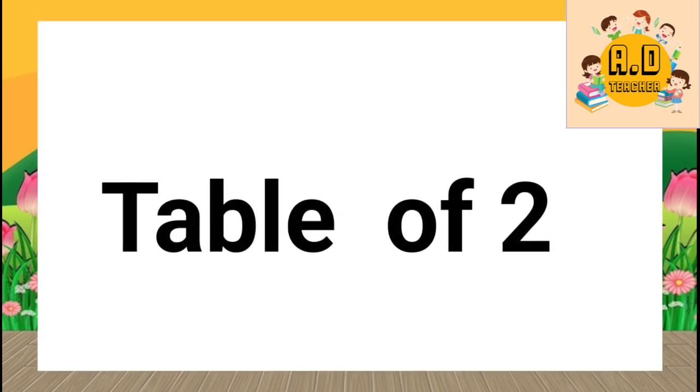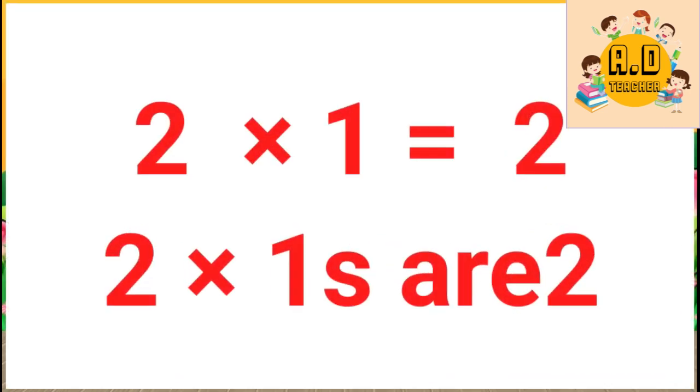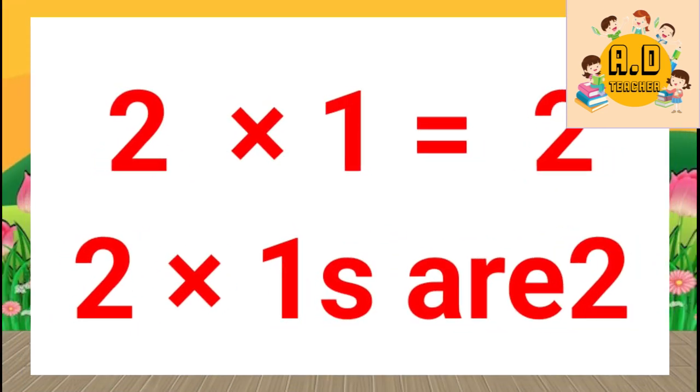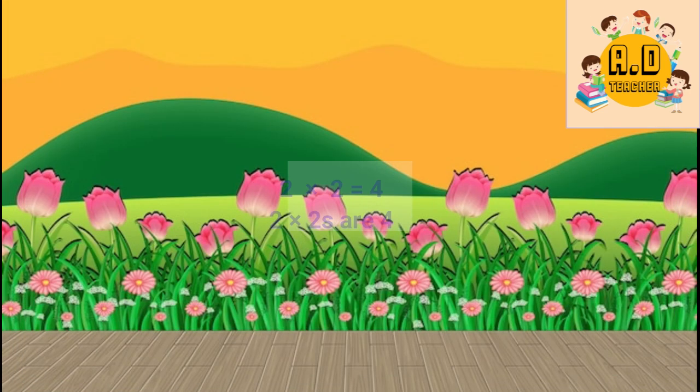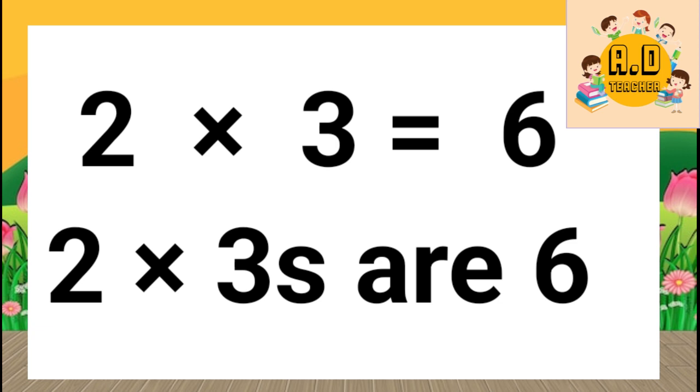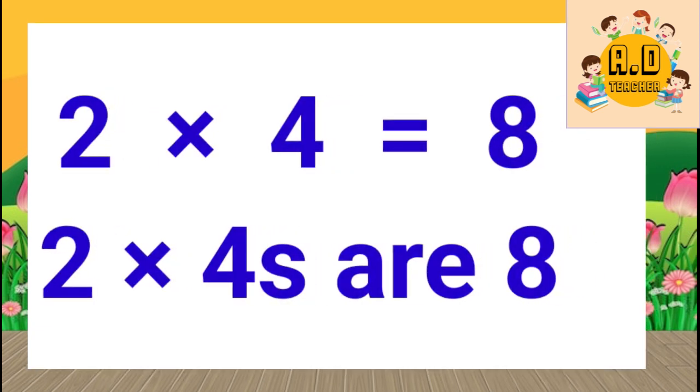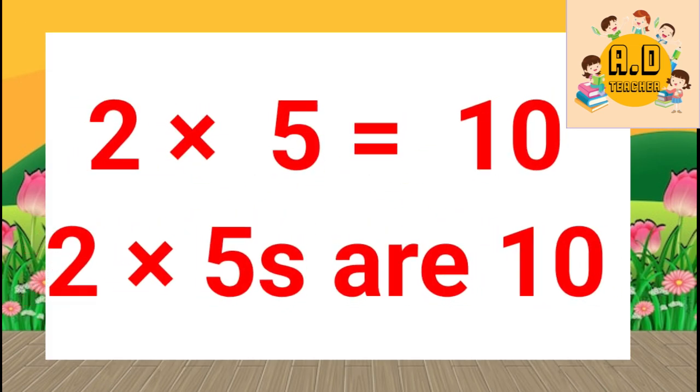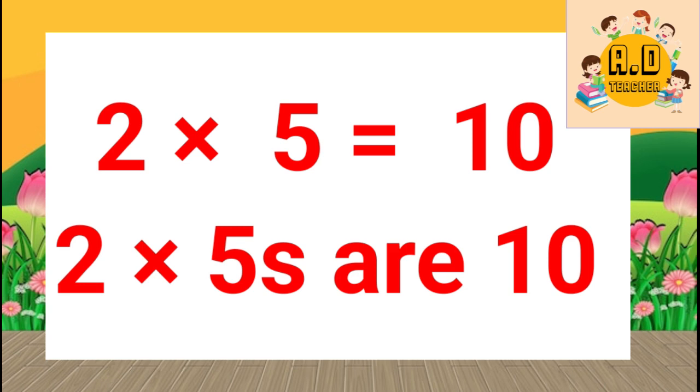Table of 2. 2 ones are 2, 2 twos are 4, 2 threes are 6, 2 fours are 8, 2 fives are 10.